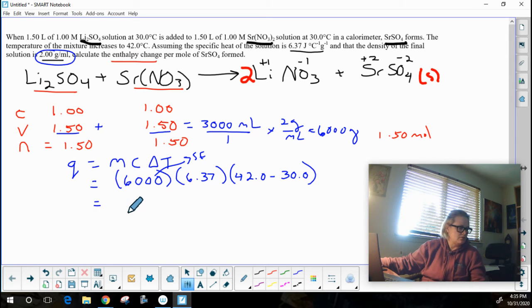So when I do this calculation, the number of joules of heat that I get ends up being, rounded to 3 sig figs, 45,900 joules.